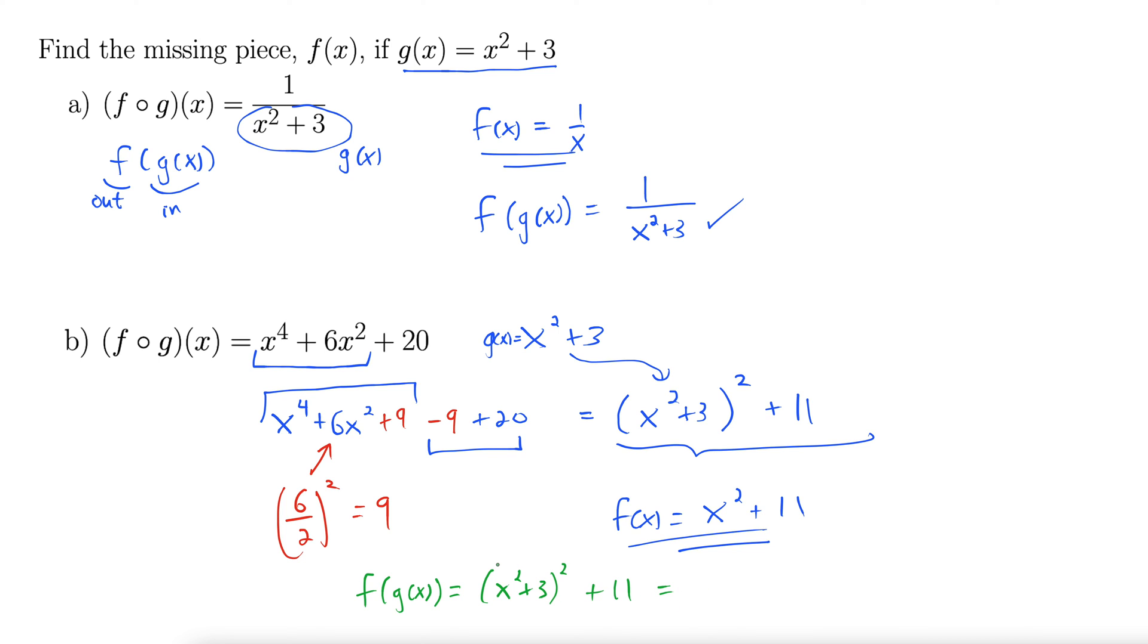So expand this out. We get x⁴ + 6x² + 9, plus 11 is still hanging out there, which is indeed x⁴ + 6x² + 20.